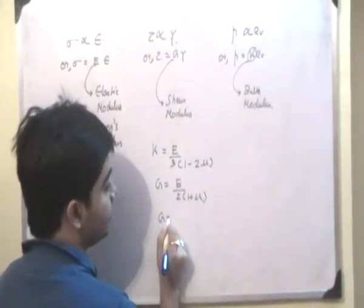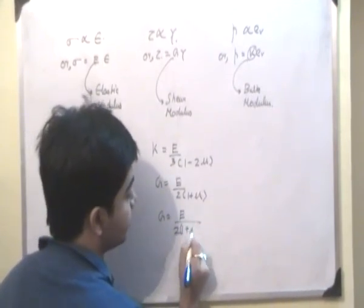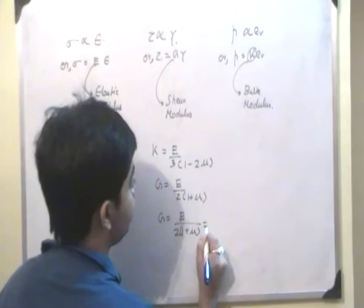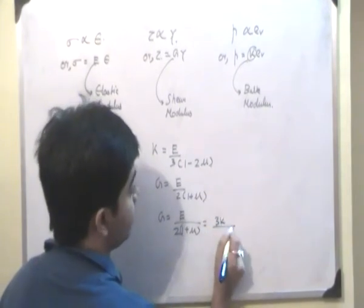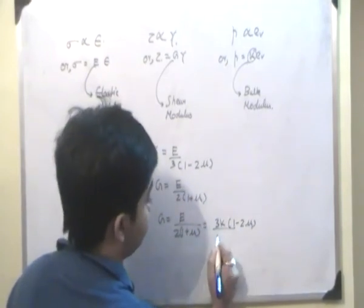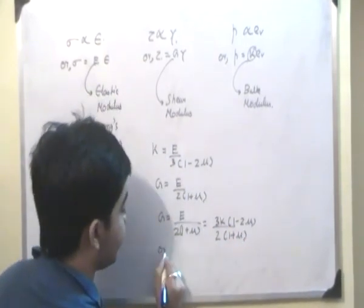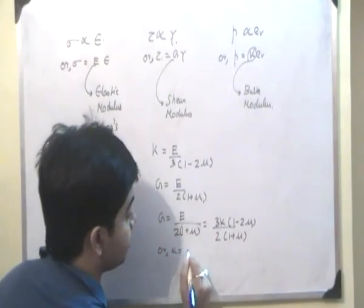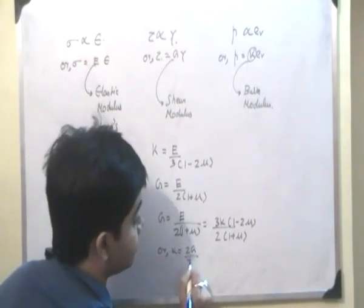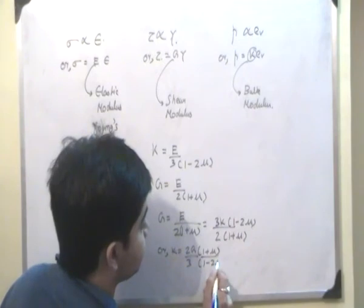Which is effectively, if G is equal to E by 2 times 1 plus mu, and E is equal to 3K times 1 minus 2 mu, then K is equal to 2G by 3. This moves up, it becomes 1 plus mu by 1 minus 2 mu.